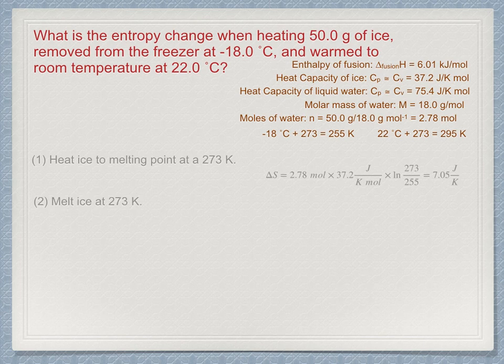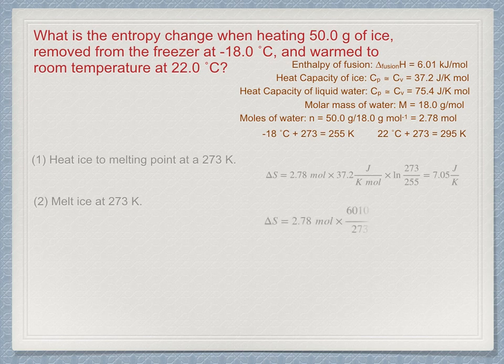Number two, melt the ice at 273 Kelvin. Be sure to watch out for the difference between kilojoules and joules. 2.78 moles times 6010 joules divided by 273 Kelvin is 61.2 joules per Kelvin.